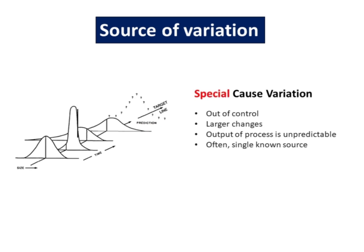Special causes, often called assignable causes, refer to any factors causing variation that are not always acting on the process. When they occur, they make the overall process distribution change. Unless all the special causes of variation are identified and acted upon, they will continue to affect the process output in unpredictable ways. If special causes of variation are present, the process output is not stable over time.